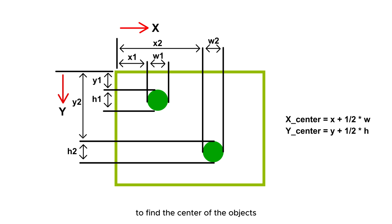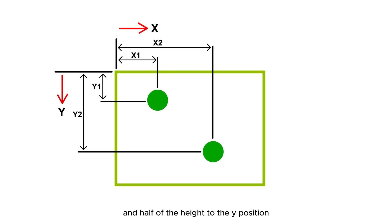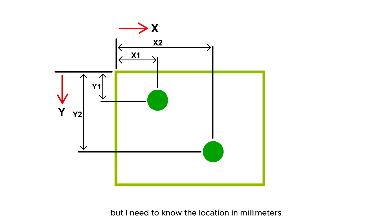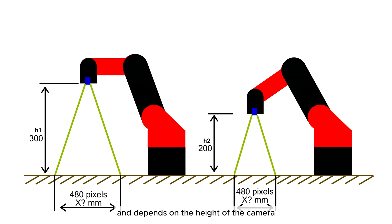To find the center of the objects, we simply add half of the width to the X position, and half of the height to the Y position. Now I know the location of the objects in pixels, but I need to know the location in millimeters. For this, I need a conversion value of millimeters per pixel, which is not a standard value and depends on the height of the camera.